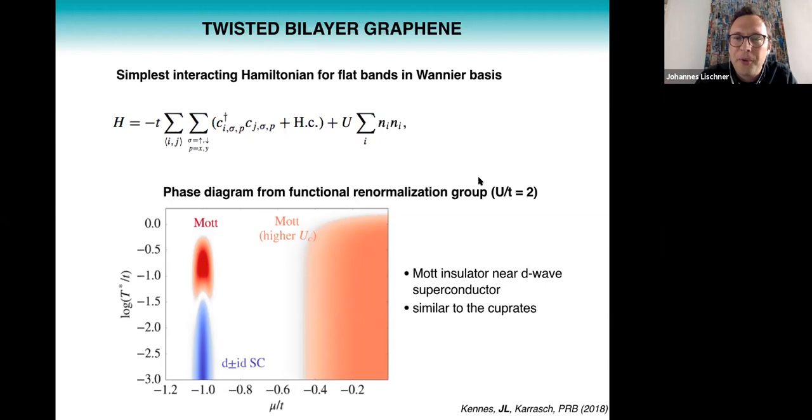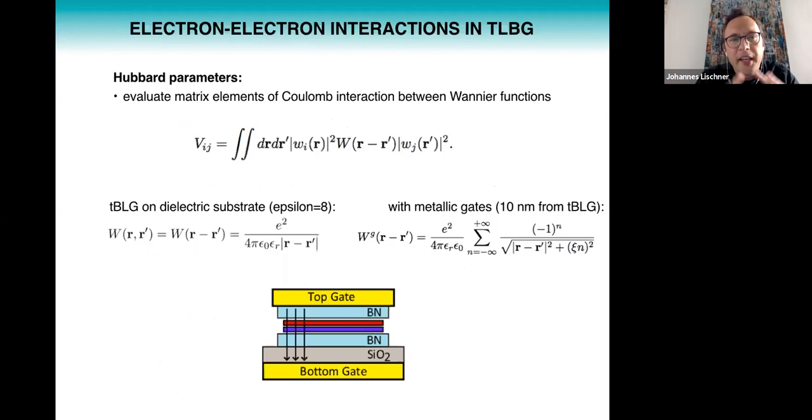But of course both this arbitrary choice for u over t and the simplicity of the Hamiltonian is something that we wanted to improve upon. So we started to calculate Hubbard parameters, not only on-site but distance dependent Hubbard parameters by evaluating these Coulomb matrix elements between different Wannier functions. The key ingredient is this Coulomb interaction omega which is quite a complicated quantity. You could approximate this by saying it's simply a Coulomb interaction reduced by the dielectric constant of the encapsulating boron nitride films. Or alternatively you could say I also want to take into account the metallic screening from the metallic gates which are always present in devices because they are needed to change the carrier concentration.